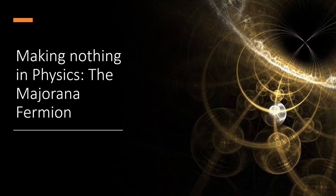In physics, for example, there's a subatomic particle called the Majorana fermion, which is its own antiparticle. And when the particle meets itself, both particles disappear.